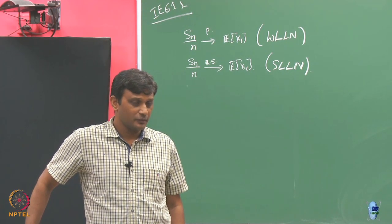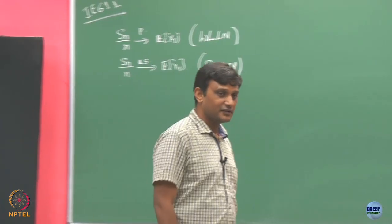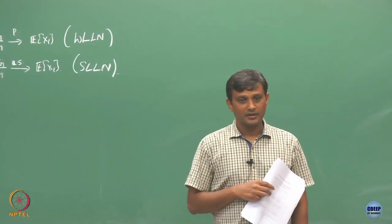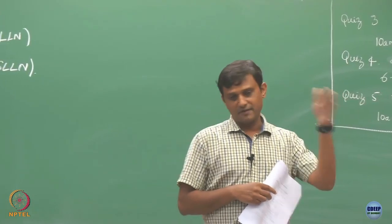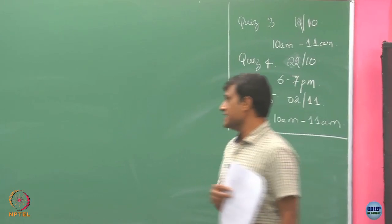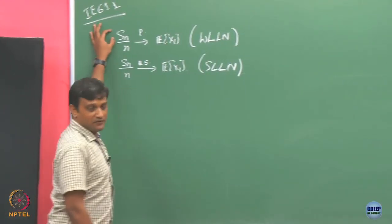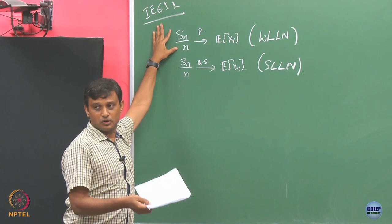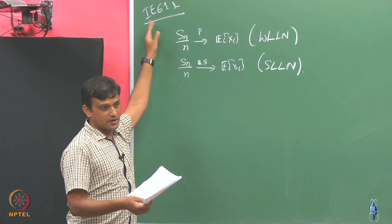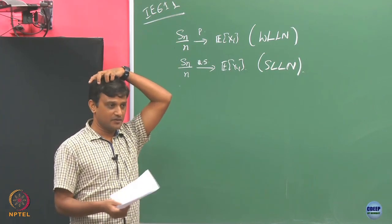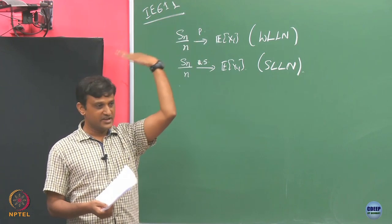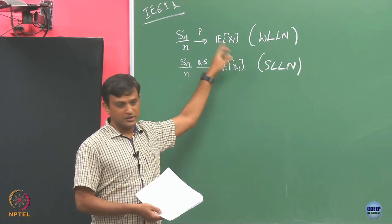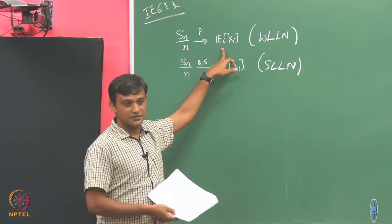To predict the future? For an iid sequence every time it will have the same distribution, so what is Sn/n? Consider the number of children per woman - we have data for many women and want to calculate the average. You can take many many samples, survey many women, average them, and if you have taken sufficiently many samples this is going to converge to that value.